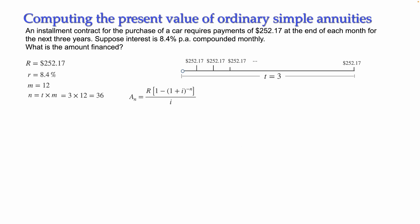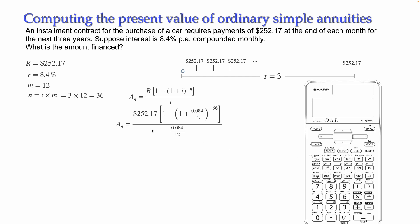So let's type the formula: present value equals payment times [1 − (1 + i)^(−n)] divided by i. Making the substitution: R = 252.17, i = 0.084/12, and n = 36. Type 252.17 and open brackets on your calculator.